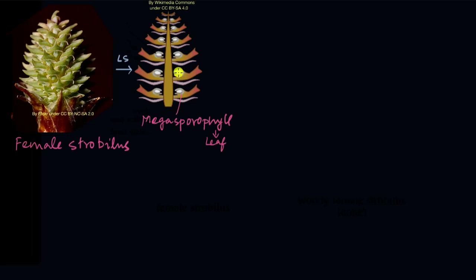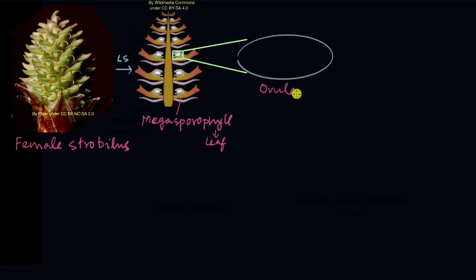Now we are going to look at this little bump in each sporophyll. This bump is nothing but the ovule. And there's a gap here, present towards the base of the sporophyll, which is called the micropyle. We will see later why the micropyle is so important.